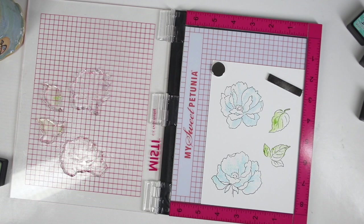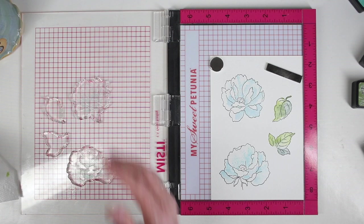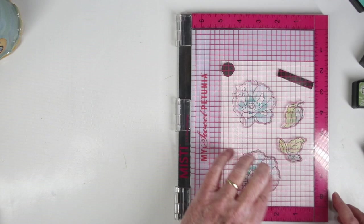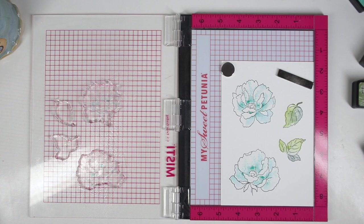Before moving on to the next stamp, I decided to add a little bit darker color into the centers of these flowers. And for that, I'm using a little bit of evergreen bough. And once I've made contact with the paper, I'll lift this up, and now you can see the pooling of the ink.